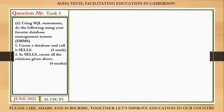Moving to question one and two: using an SQL statement, do the following using your favourite database management system — in this case we'll use Microsoft Access. First, create a database and call it 'cells'. In SQL we simply say: CREATE DATABASE cells; Then the second part says to create all the relations given. To create a table we say CREATE TABLE, give a name, give the attributes with their data types, and any constraints or conditions.